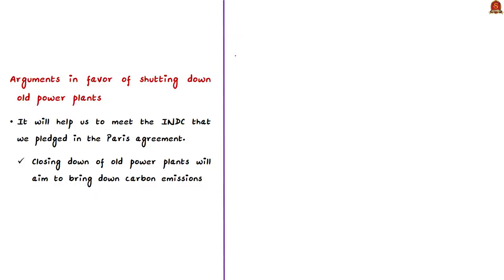Imagine you are attending the mains exam and in GS3 you get a question: 'Recently the government has proposed to wind up aging coal power plants. Although the move is aimed at greening the power supply sector, the move also entails potential disadvantages. Critically analyze.' The keyword here is 'critically analyze,' which means you have to write the pros and cons. The points discussed in this editorial will provide relevant information to answer this question.